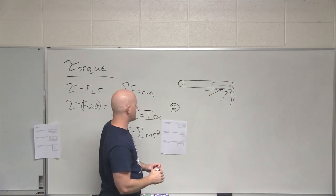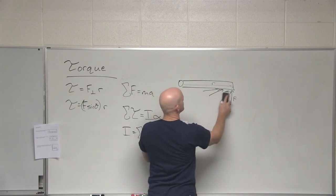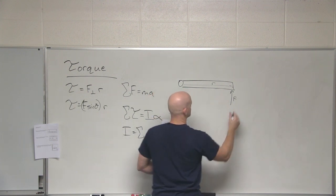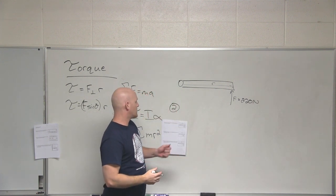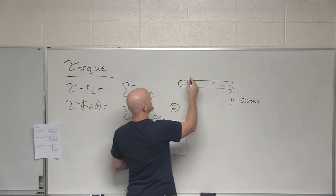Number 2 says, what is the torque generated by a 220 newton force applied perpendicular to a door 0.5 meters from its hinge?